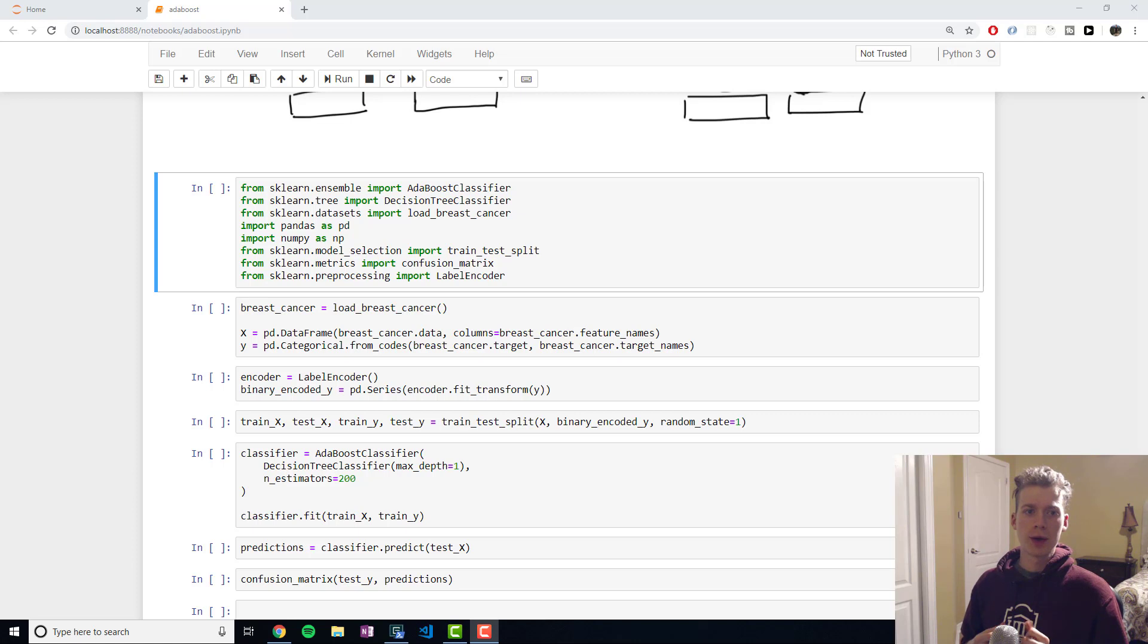Let's take a look at how we'd go about implementing the AdaBoost classifier in Python. We'll be using the AdaBoost classifier from the sklearn library. We're also going to need the decision tree classifier because we're going to be using decision trees within our ensemble. Just to make this easier, I'm going to be using the breast cancer dataset from sklearn. Obviously we'll be importing pandas, numpy, and then some other functions.